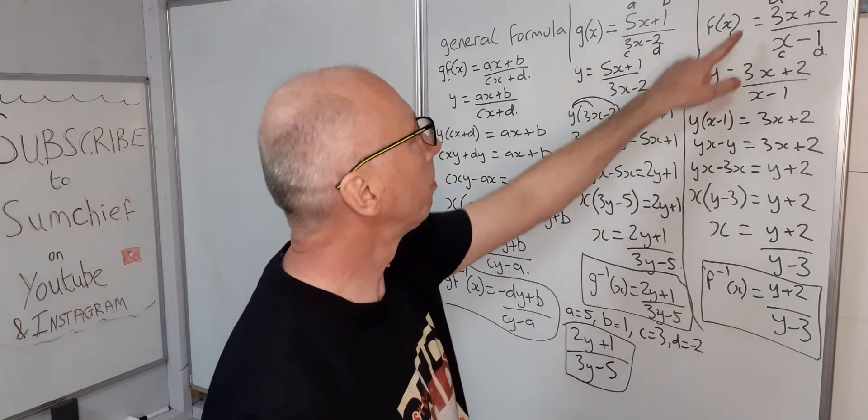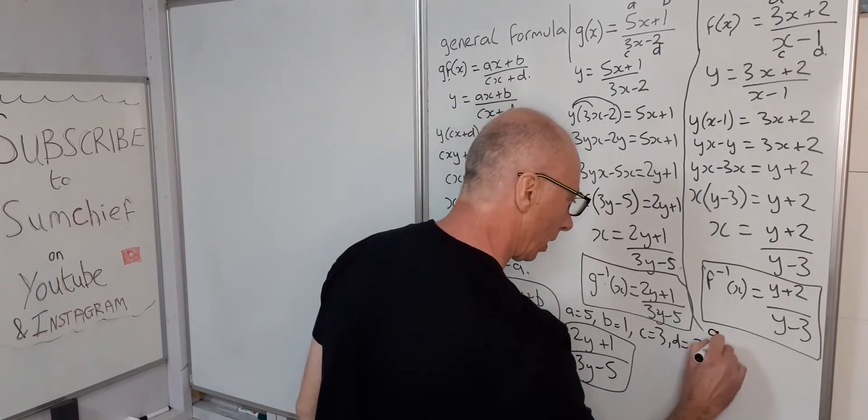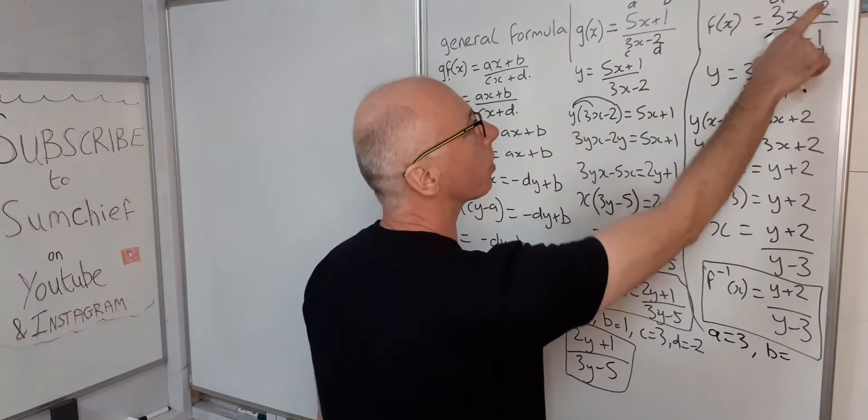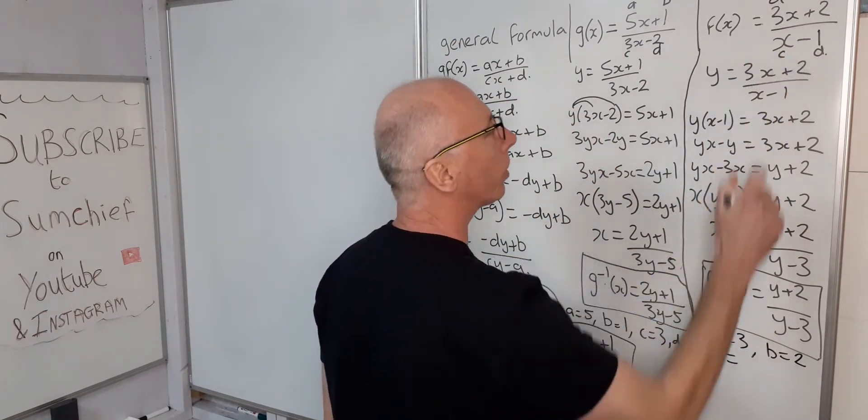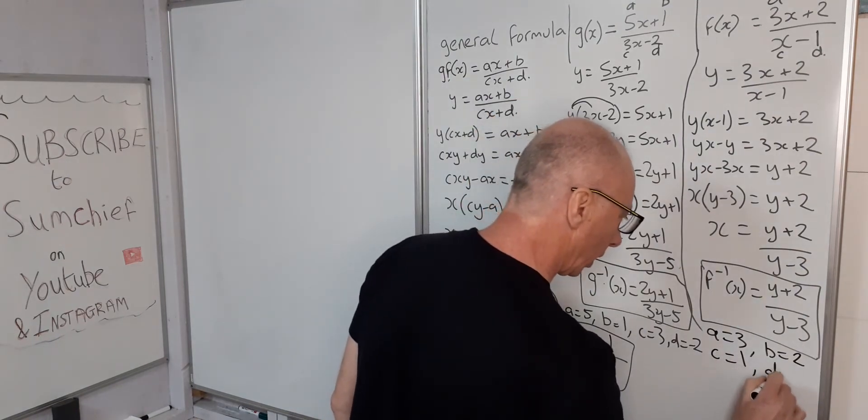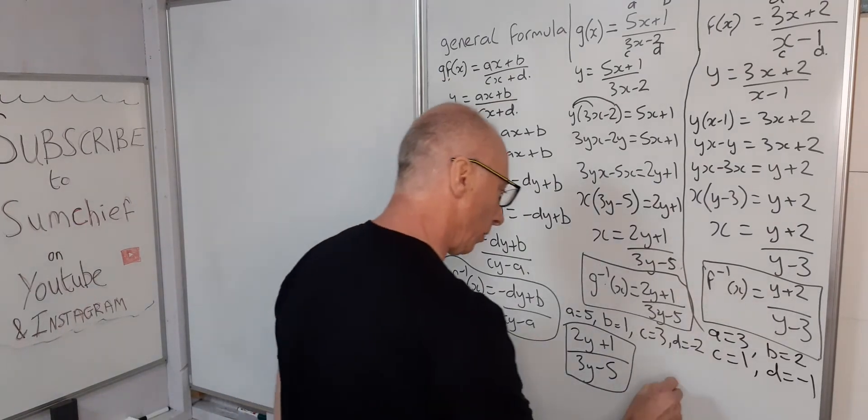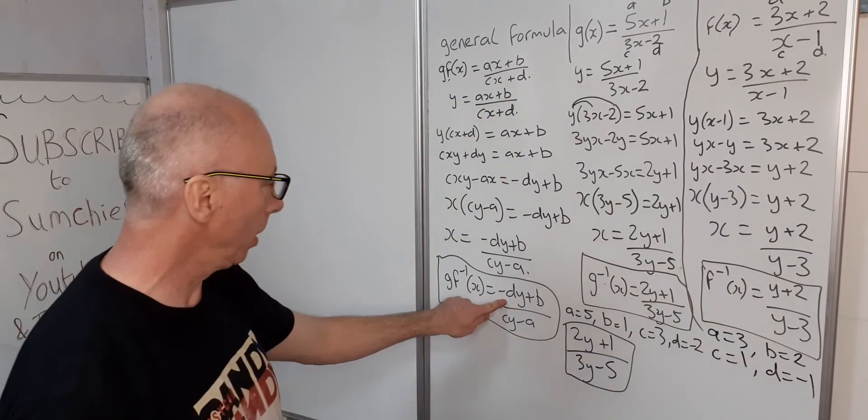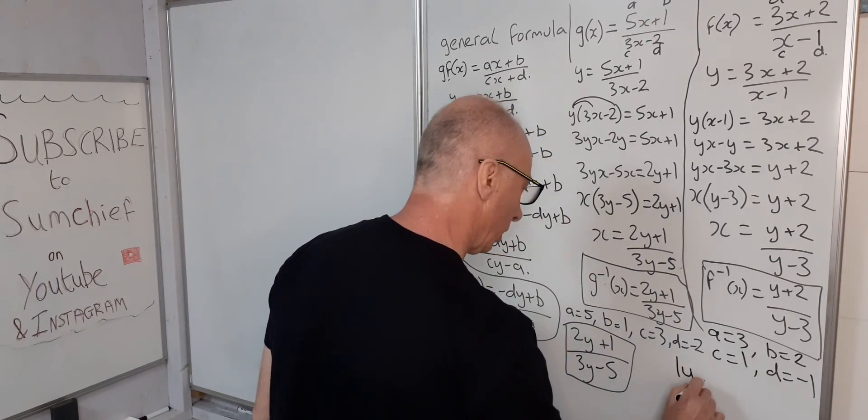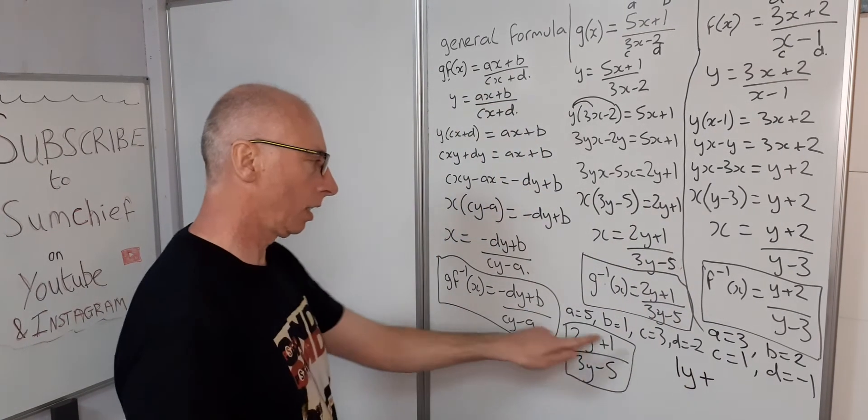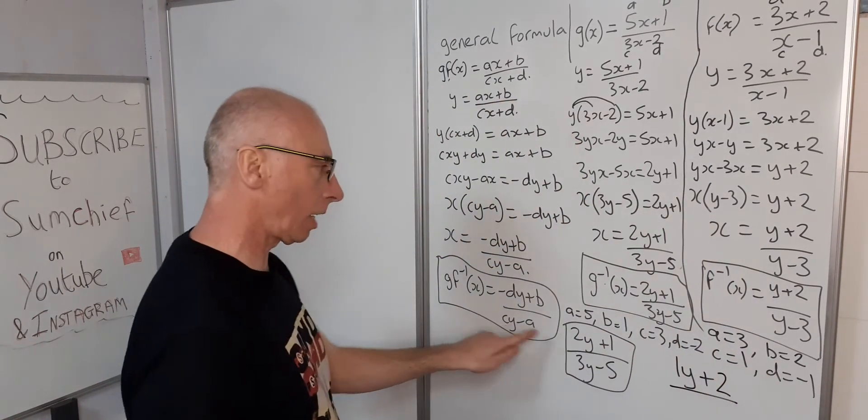So now let's try this one. So a is three, let's write this here: a equals three, b equals plus two, c equals one, and d equals minus one. Okay, let's write this in as for our formula. So minus dy, so minus minus one is y, plus b, b is two, divided by c times y which is just y.